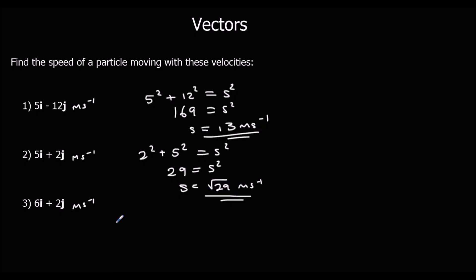And question 3. So 6 squared plus 2 squared equals the speed squared. 36 plus 4 is 40. So the speed is root 40 meters per second.